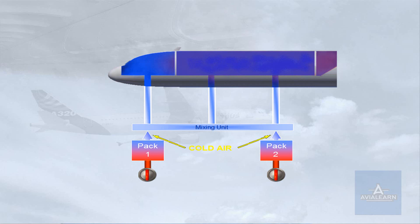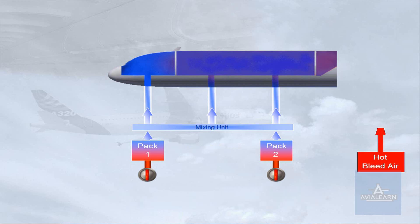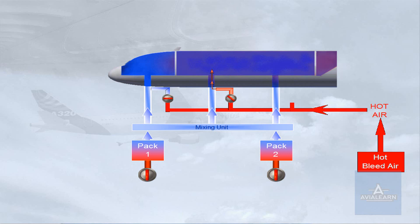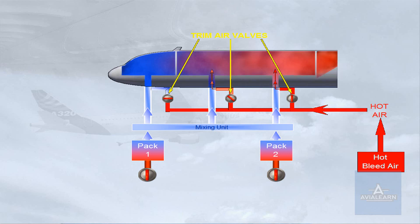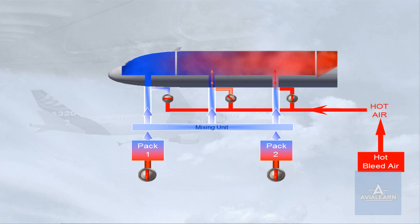Normally, cold air is delivered by the packs and is then sent to the three zones. Since the different areas of the aircraft may require different amounts of cooling or heating, hot bleed air can be added via trim air valves to obtain the demanded temperature for a zone. In the example shown, no hot air is being added to the cockpit zone, some hot air is being added to the forward cabin zone, and a lot of hot air is being added to the aft cabin zone.